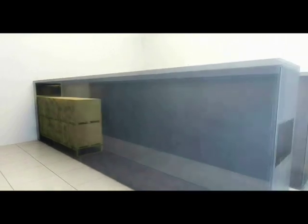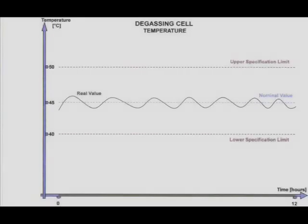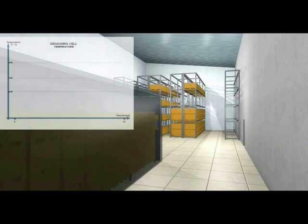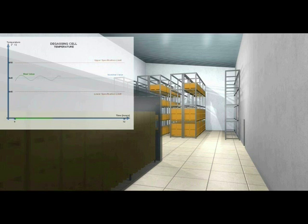The degassing cell functions in much the same way as preconditioning cell number 1 with circulated temperature-controlled air atmosphere, typically 45 degrees Celsius. The air is however constantly replaced and exhausted to the ethylene oxide neutralizing system.